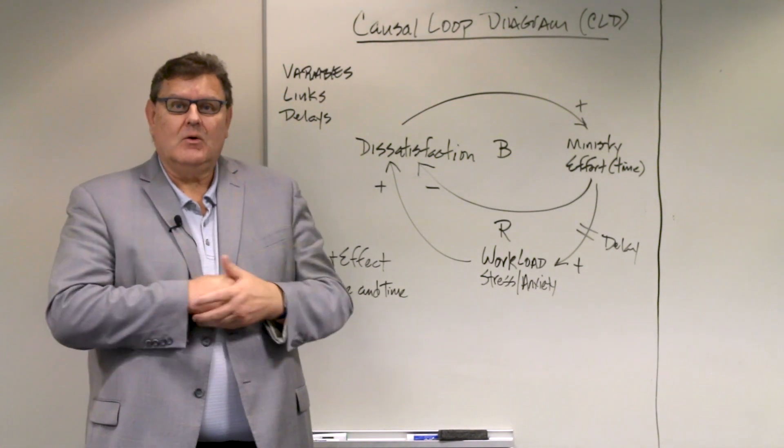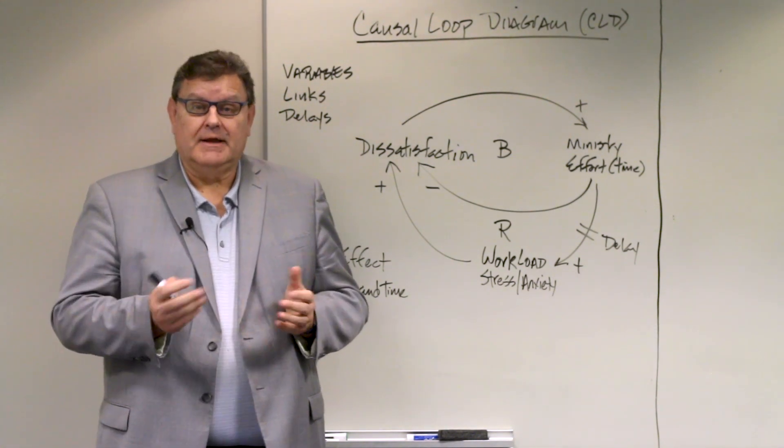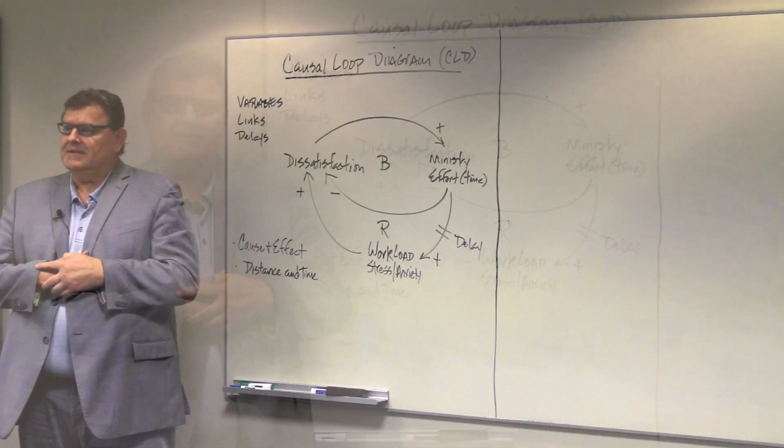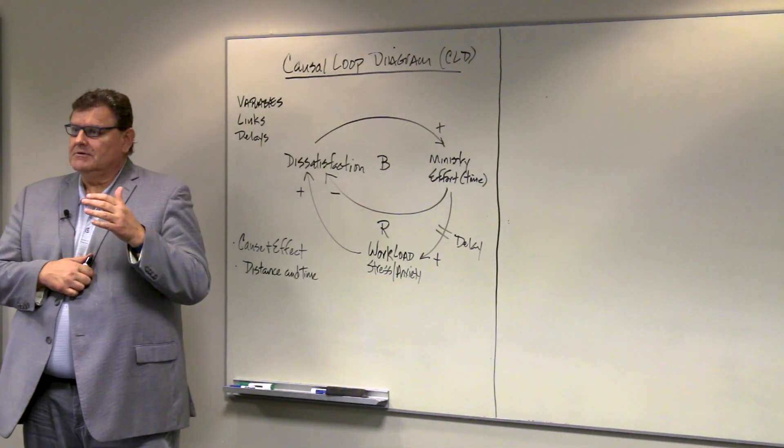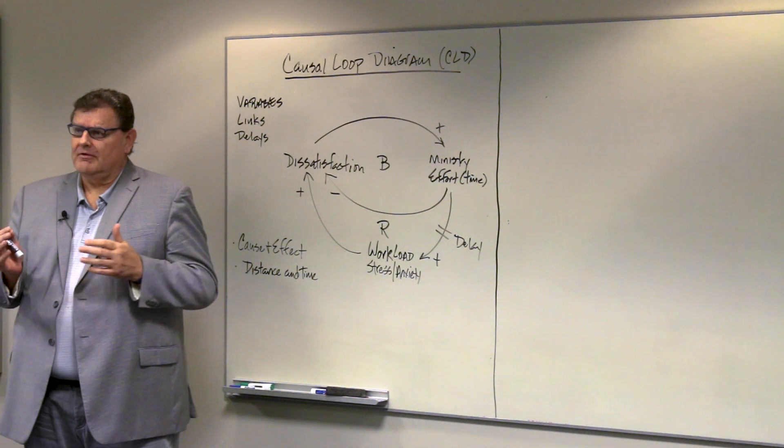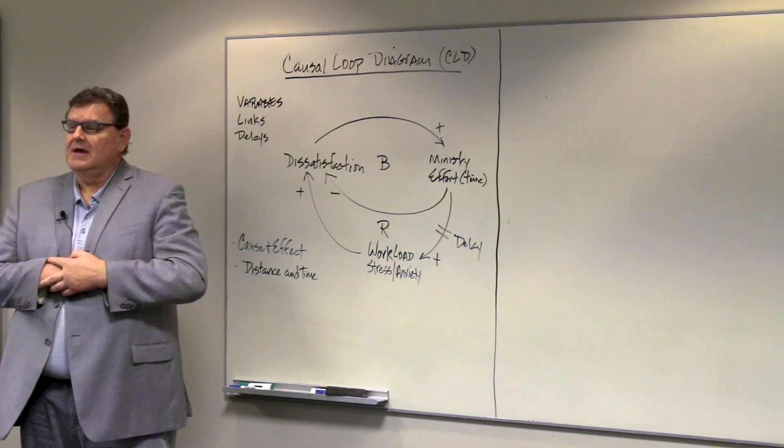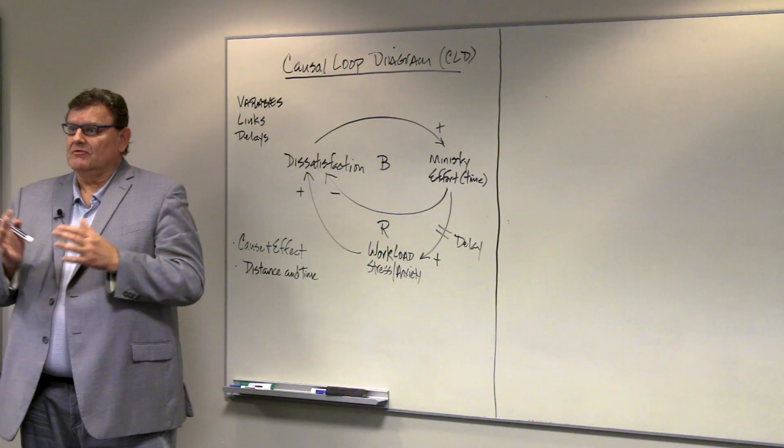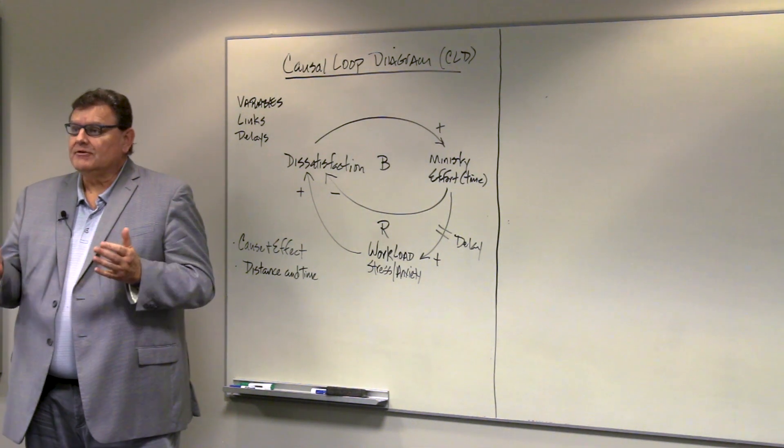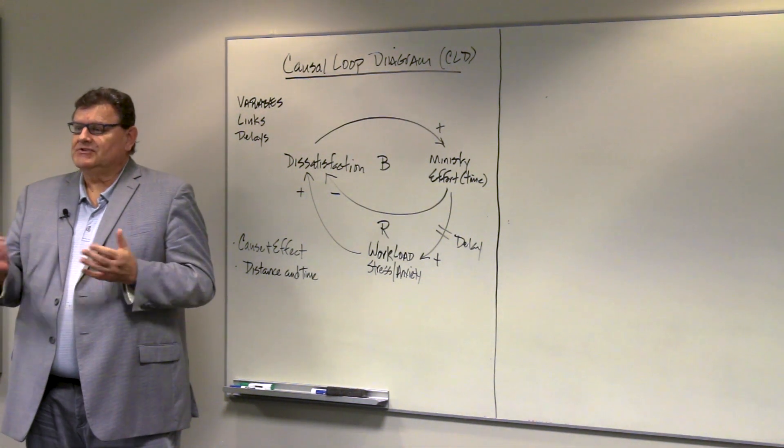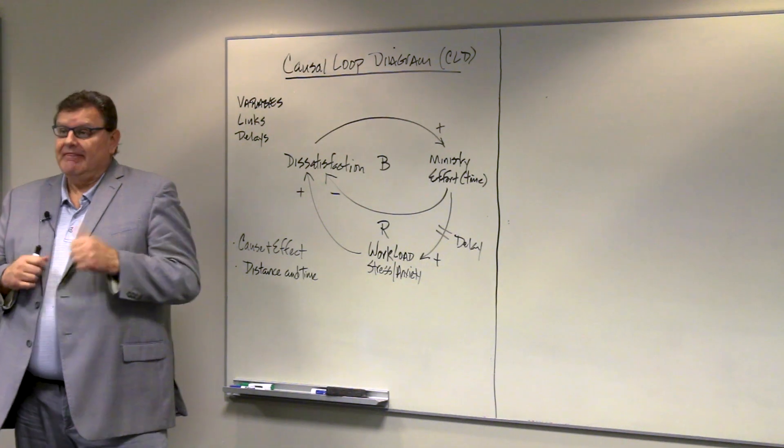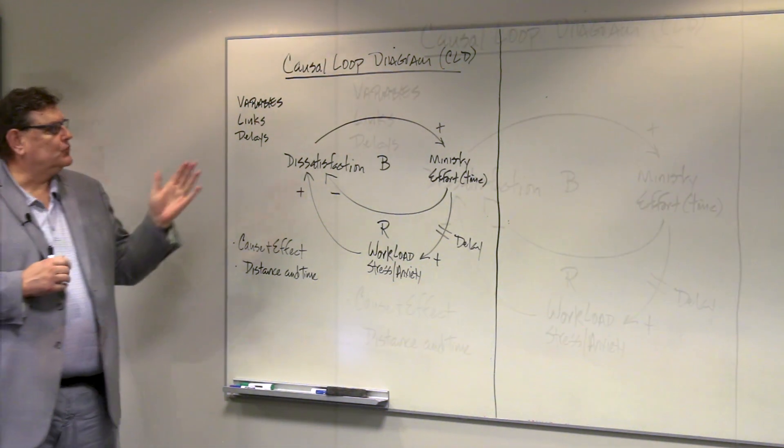We're at the point now of determining what's really going on in our church system. Last time we talked about identifying variables and starting to think about whether they're symptoms or core problems. I said that they provide the basis for a fuller understanding, another tool that will give us a deeper understanding of what's really going on. And that tool is called a causal loop diagram.